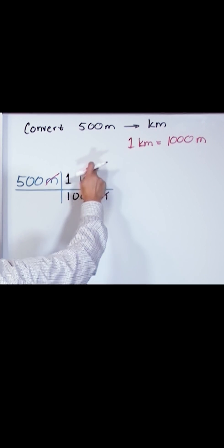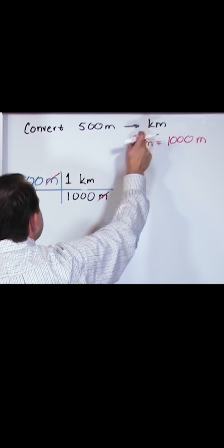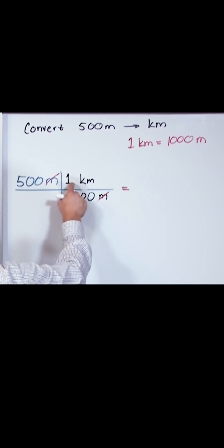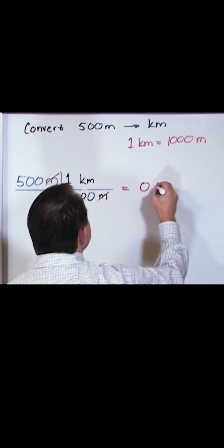The final unit we're going to have is kilometers, which is what we want. We're trying to convert to kilometers. 500 times 1 divided by 1,000 is going to give you 0.5.